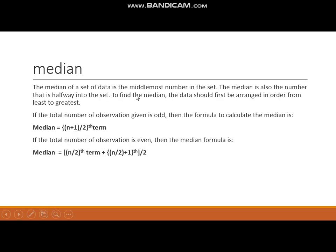Median. Median is the middlemost number of the given set of data. If we have a set of data or a series given, the middlemost number is the median. For median, we find two formulas: if N — the number of observations — is odd, we use one formula.